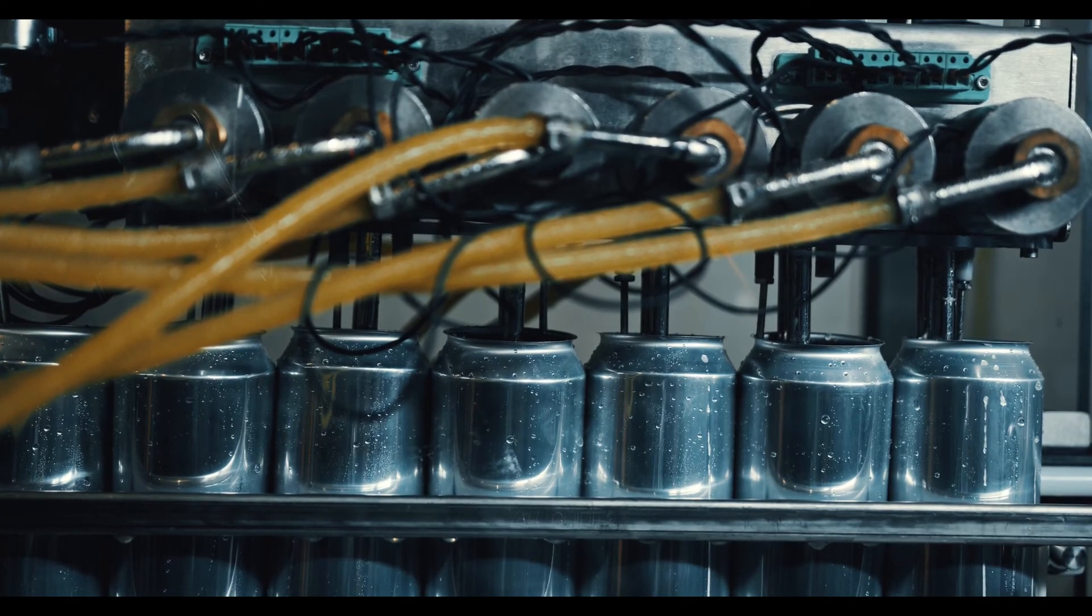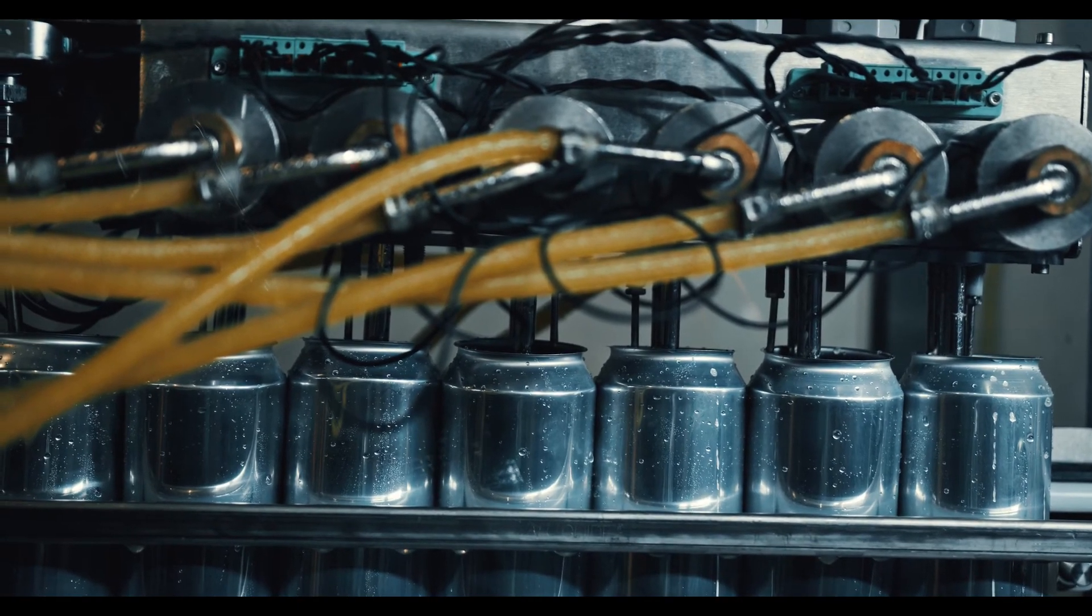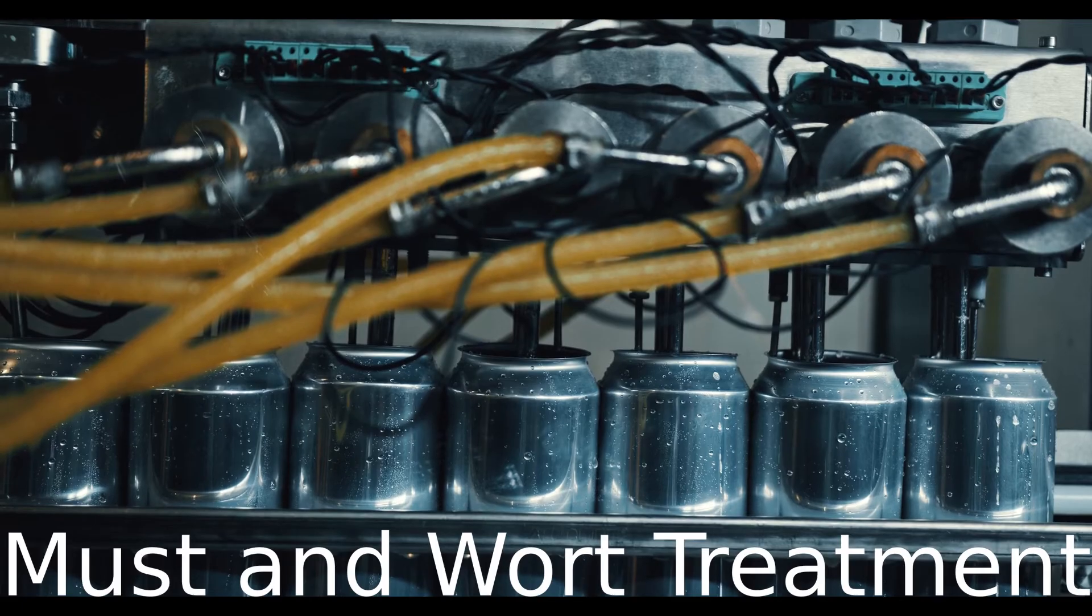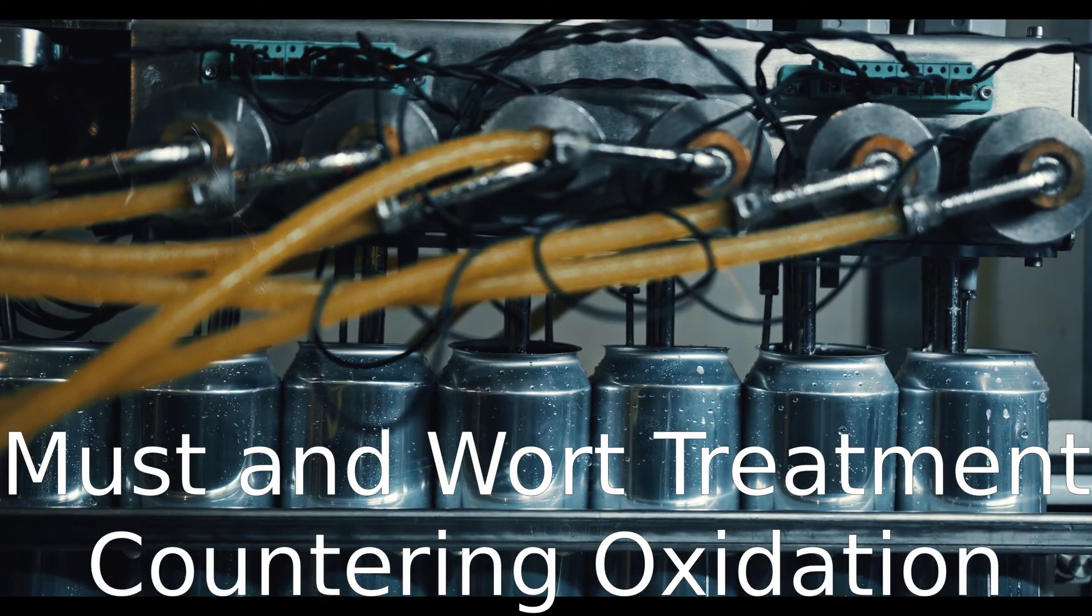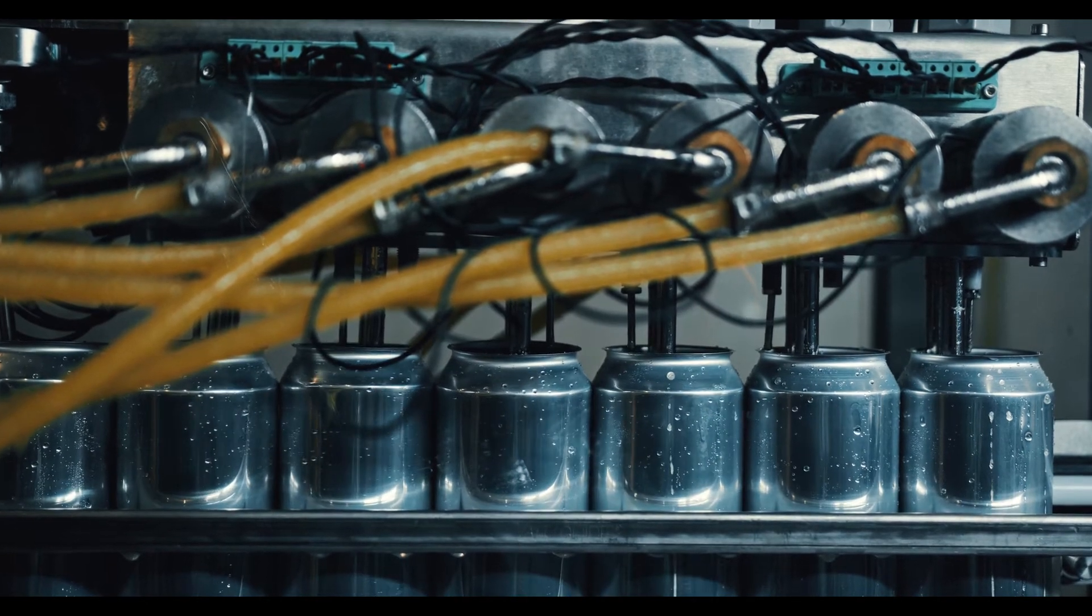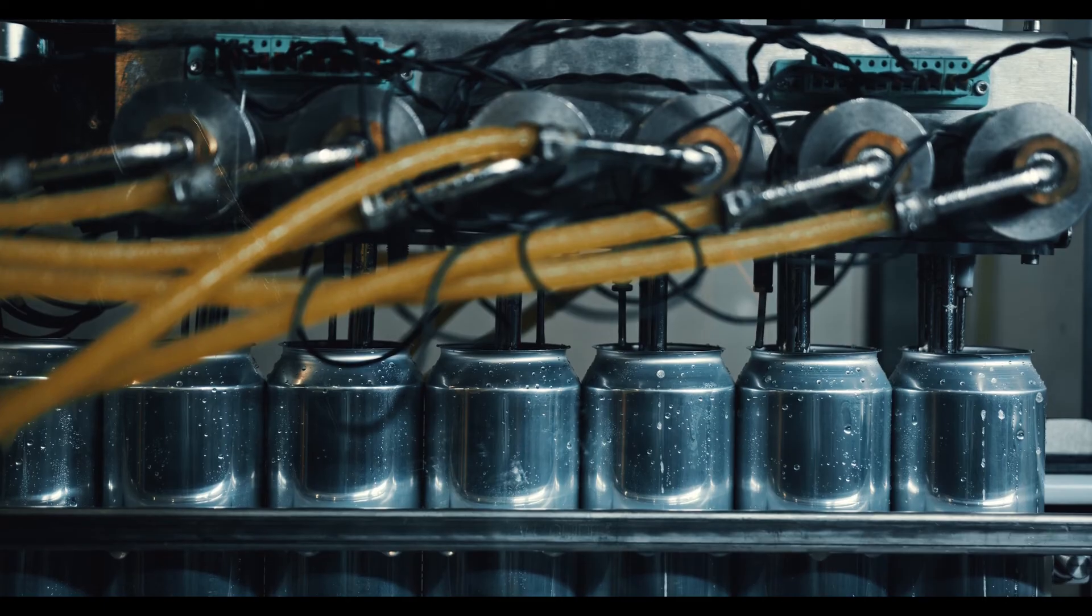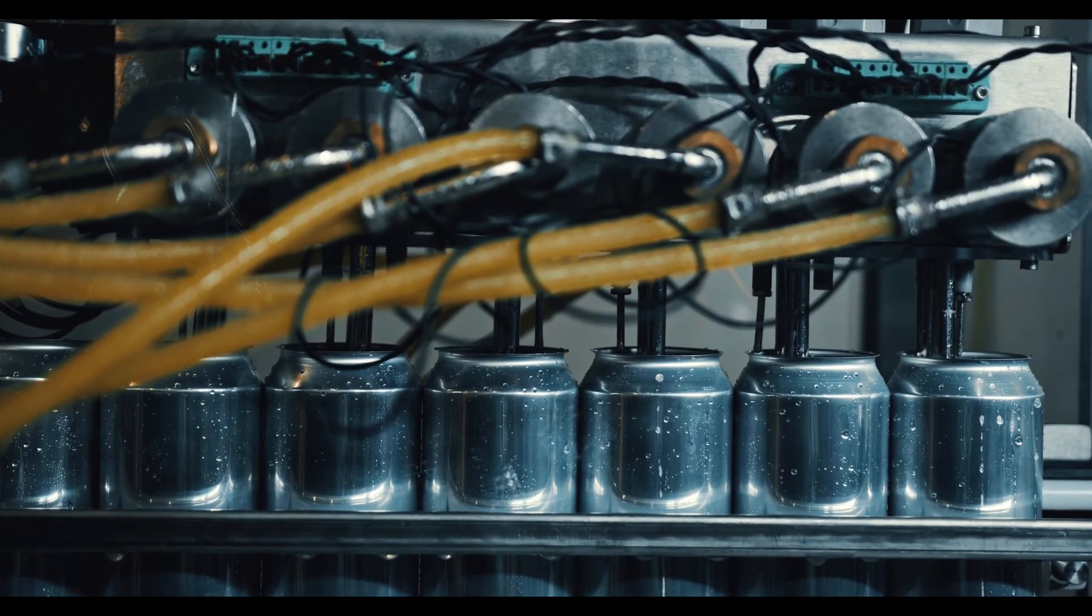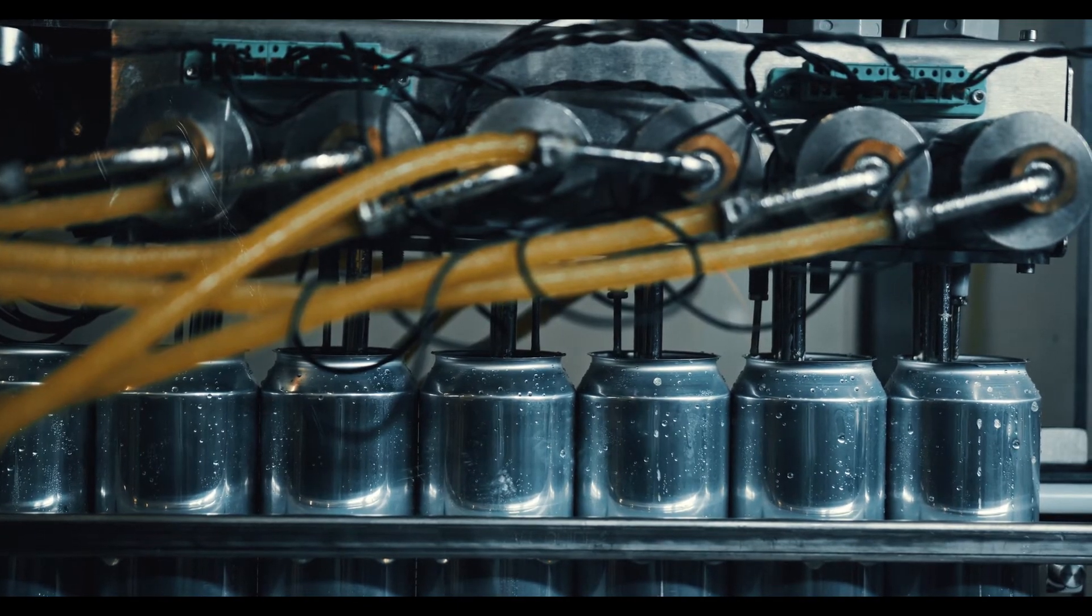Those are the brief ways to use Camden tablets, and in brewing they basically cover everything. This is your treating of must and wort for wine and beer, counteracting oxidation, purging chlorine, and sanitising. For each of these we'll describe what you'll do and how you'll do it, so if there's a particular application you're interested in there will be timestamps in the description box below.